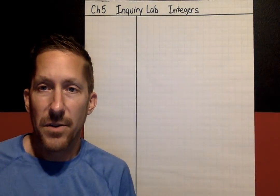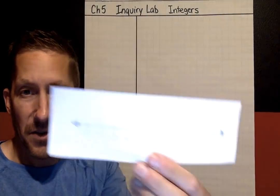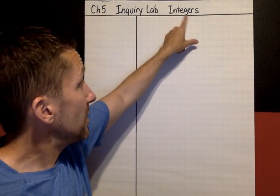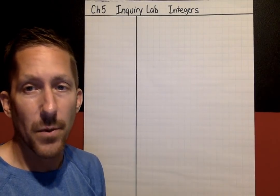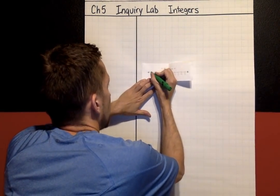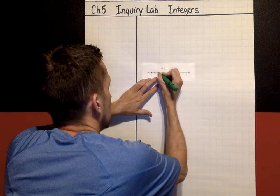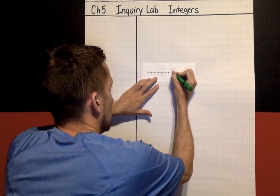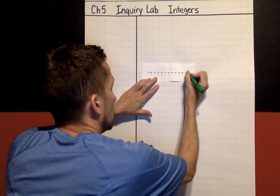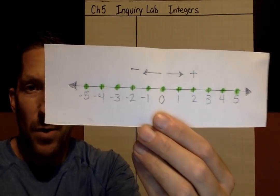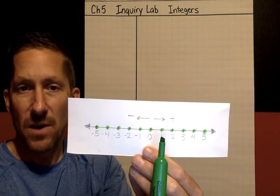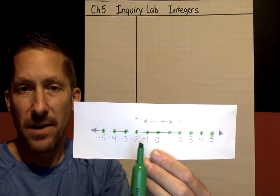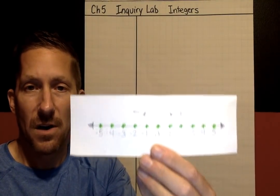Next, we are going to put a point on all the integers on this number line. The lab is about integers — for most sixth graders, that is a new vocabulary word. I'm going to use a highlighter and put a point on the integers. Zero is an integer, so is one, two, three, four, five, negative one, negative two, negative three, negative four, negative five — all of those are integers.